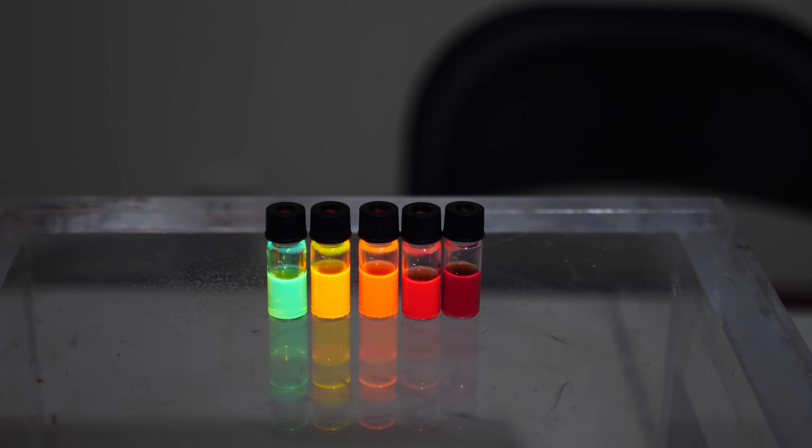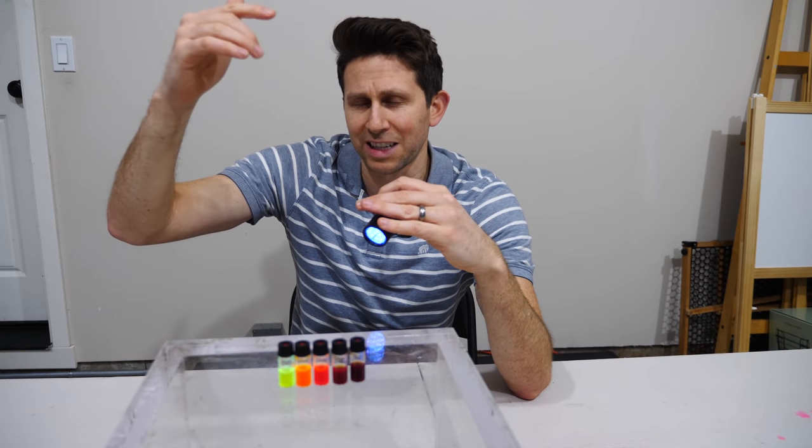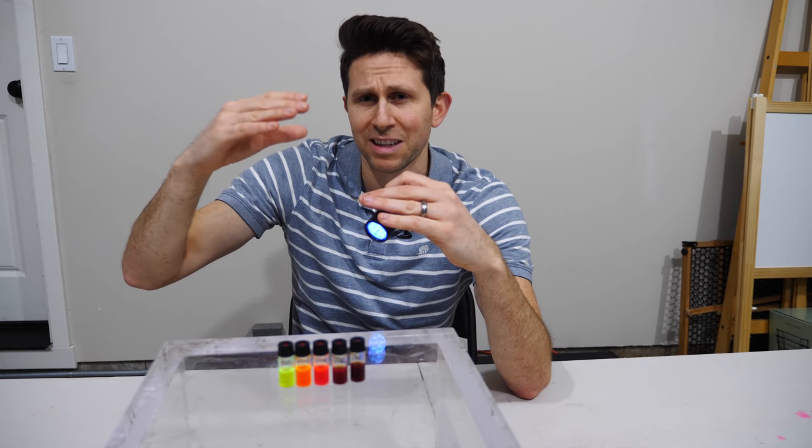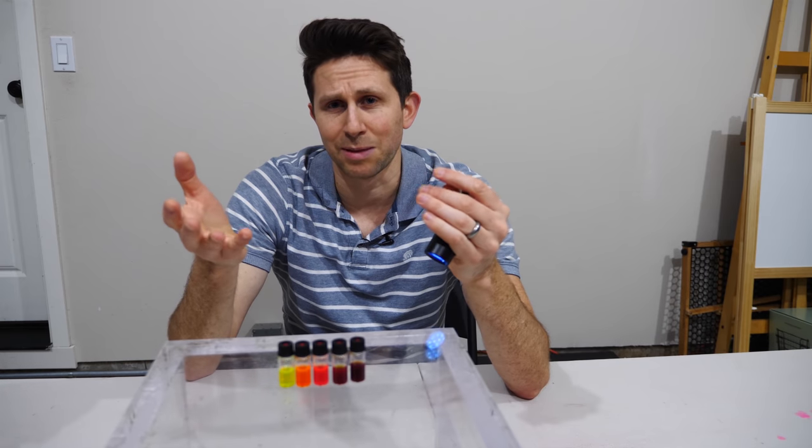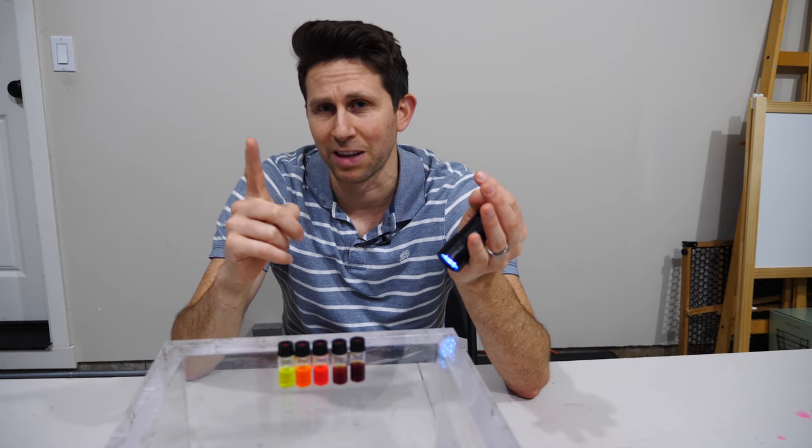But the quantum dots are so small that those electrons only fall down a specific energy level and it only re-emits a very specific wavelength of light when it falls back down. If the material is bigger then there's lots of different energy levels for that electron to fall back down. And so a typical semiconductor material doesn't emit only one wavelength of light.